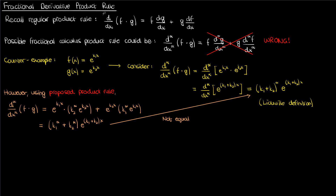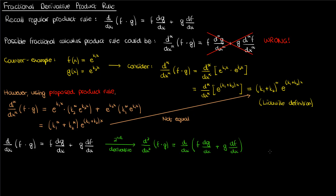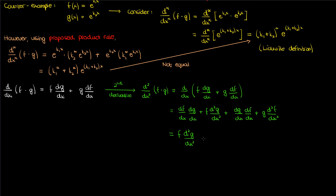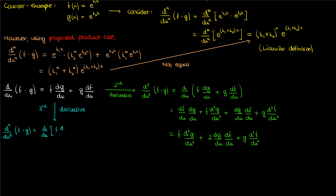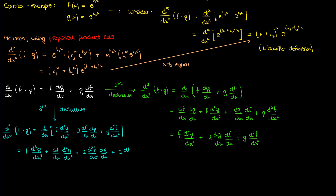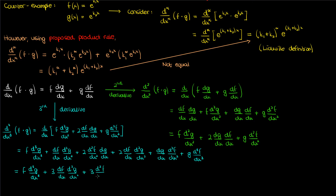Let's go back and start with the typical product rule for first derivatives. Taking the second derivative of the product of two functions requires applying the product rule to both terms, and combining the like terms involving products of first derivatives yields a specific expression. Taking the third derivative means differentiating that second derivative expression once more, applying the product rule to three different terms, and combining like terms to get the final result.